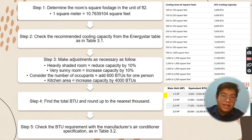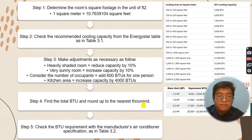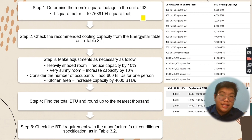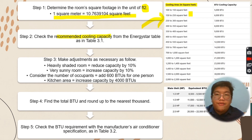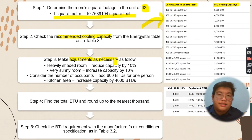Here is the procedure to determine the horsepower needed to install an air conditioner. The first step is to calculate the area of the room in square feet, where one square meter equals 10.76 square feet. After that, we check the recommended cooling capacity by referring to table 3.1, which gives the BTU cooling capacity based on the cooling area in square feet. After that, we make some adjustments as necessary.